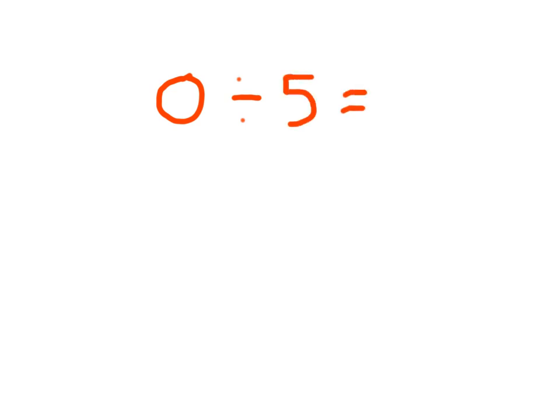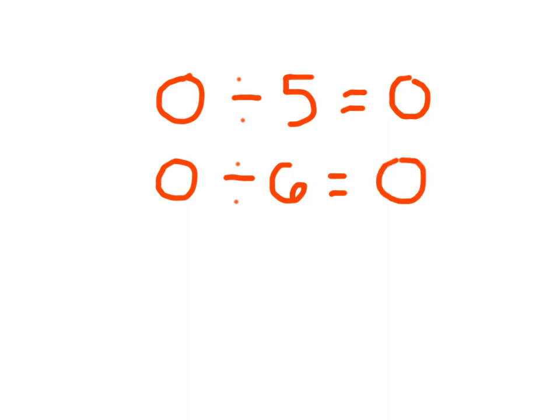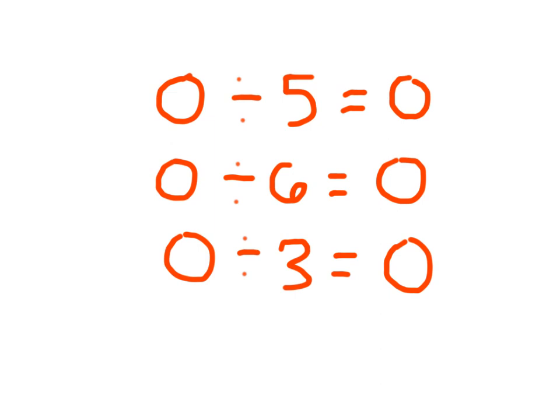Now, in this case, 0 divided by 5 — you can do that. 0 divided into 5 parts is still 0. 0 divided by 6 does equal 0. 0 divided by 3 equals 0. When you divide 0 by a number other than 0, the quotient is 0.